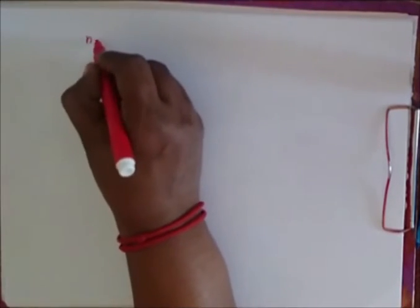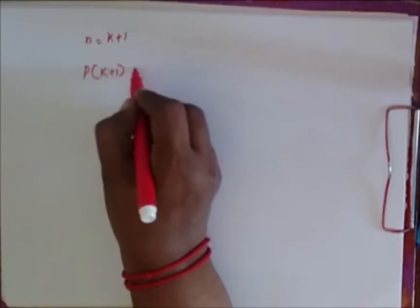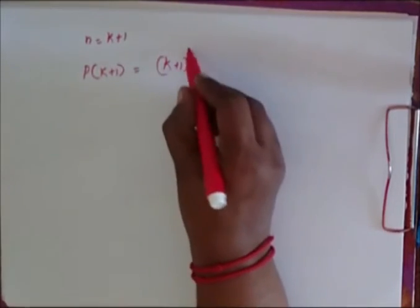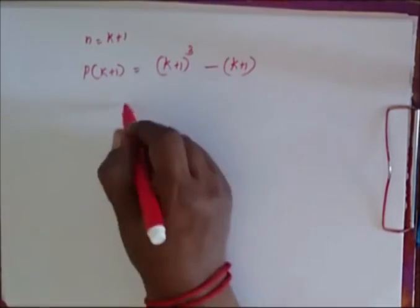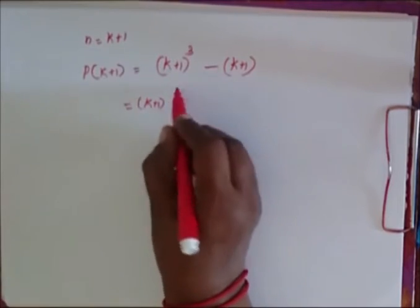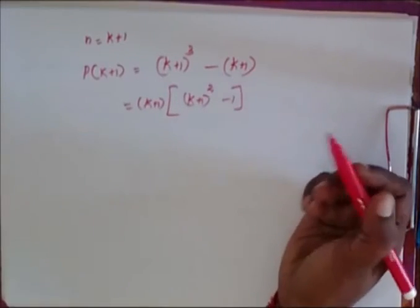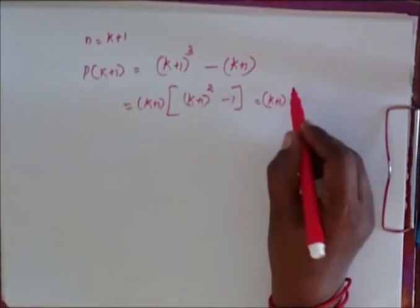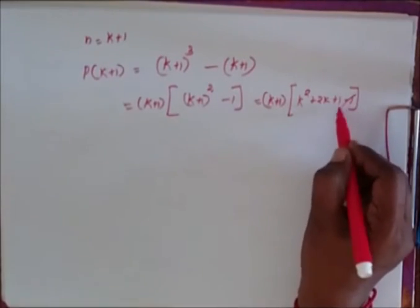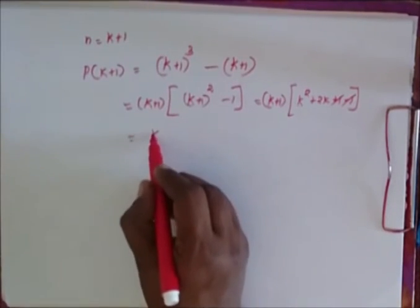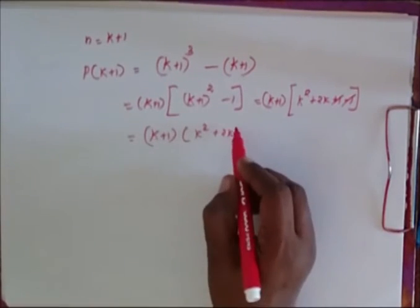Now I consider my N is equal to K plus 1. So my P of K plus 1 is equal to (K plus 1) cubed minus (K plus 1). In the place of N, I substitute K plus 1. So here I take (K plus 1) out as a common factor, giving (K plus 1) times [(K plus 1) squared minus 1], which equals (K plus 1) times [K squared plus 2K plus 1 minus 1].